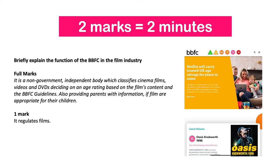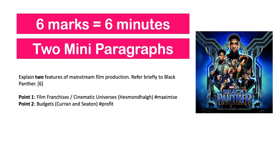For a six-mark question you're going to have about six minutes — probably one detailed paragraph or two mini paragraphs. Look at this question: 'Explain two features of mainstream film production. Refer briefly to Black Panther.' Your first point could talk about film franchises and cinematic universes and how that maximizes audiences, then move on to budget — big budgets and profit, with a bit of Curran and Seaton. Two quick points using some theory. Remember: don't explain the theory, you're applying it. If you use 'maximize audiences' just put Hesmondhalgh in brackets; if you say 'generating large profits' just put Curran and Seaton in brackets — you're telling the examiner you know the theory and have applied it.